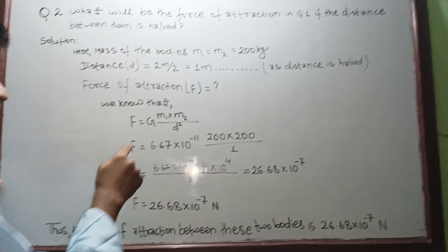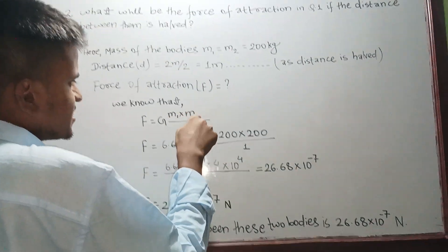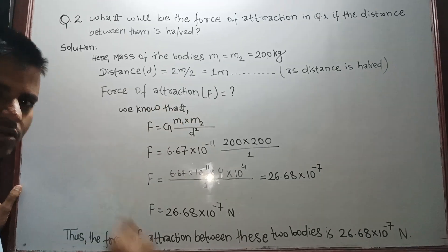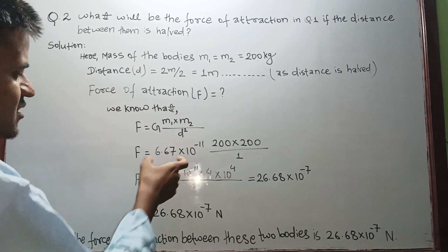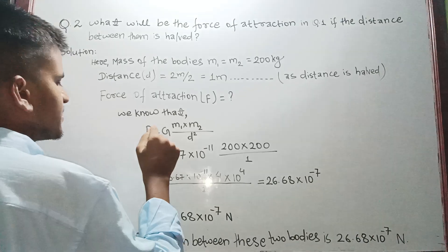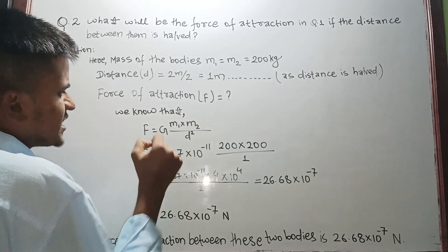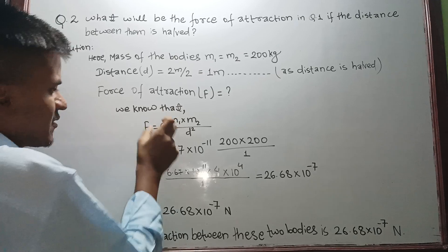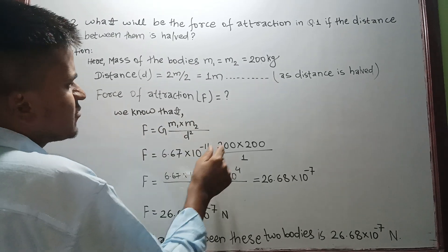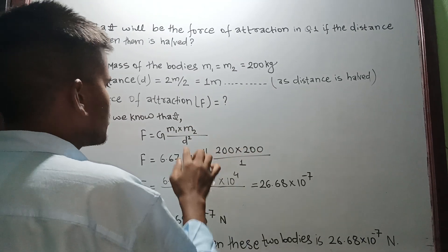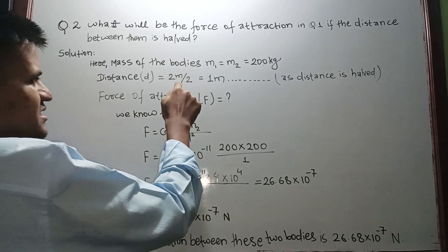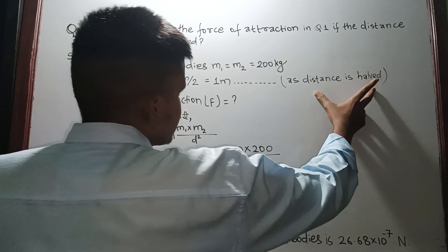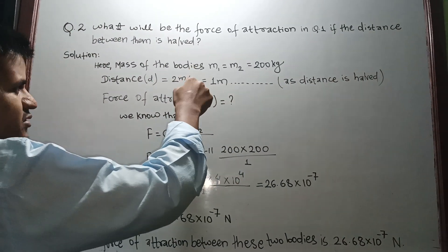Now see here, F equals to Gm₁m₂/d². So F equals to - what is the value of G? We know that F equals to 6.67 × 10⁻¹¹. We have substituted the value of G. M₁ and M₂ - M₁ is 200, M₂ is 200, and distance d squared. See, what is the distance? Distance has been halved, so 2 meters by 2 equals to 1 meter.